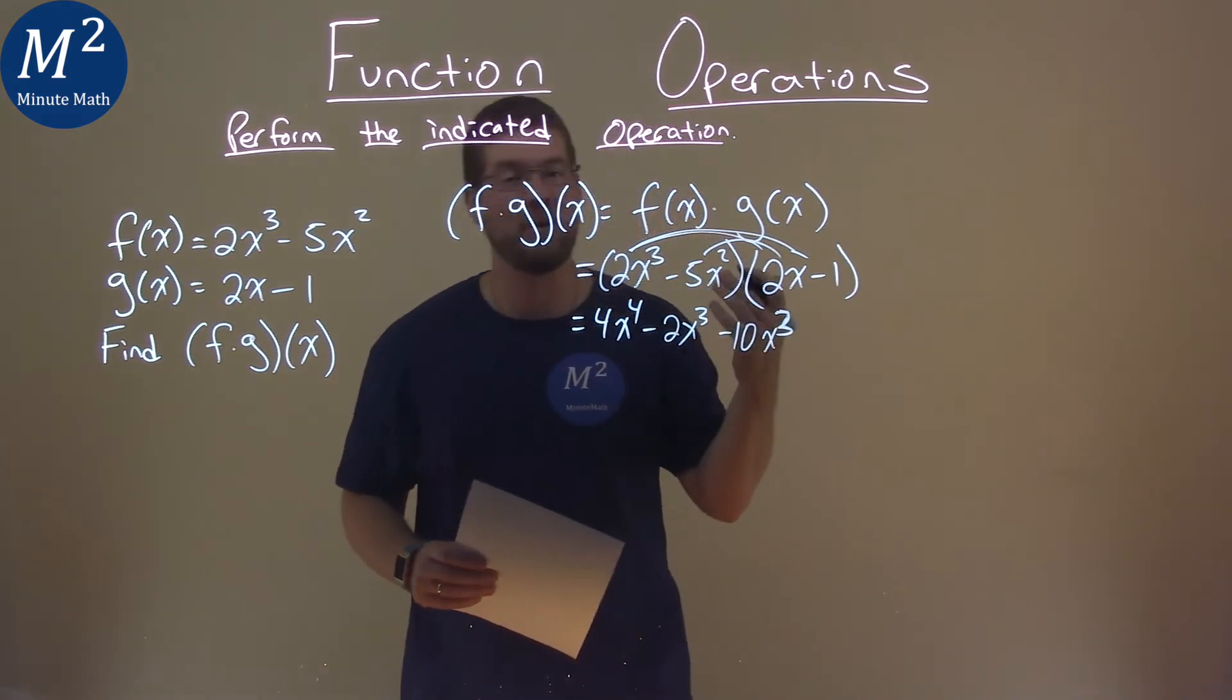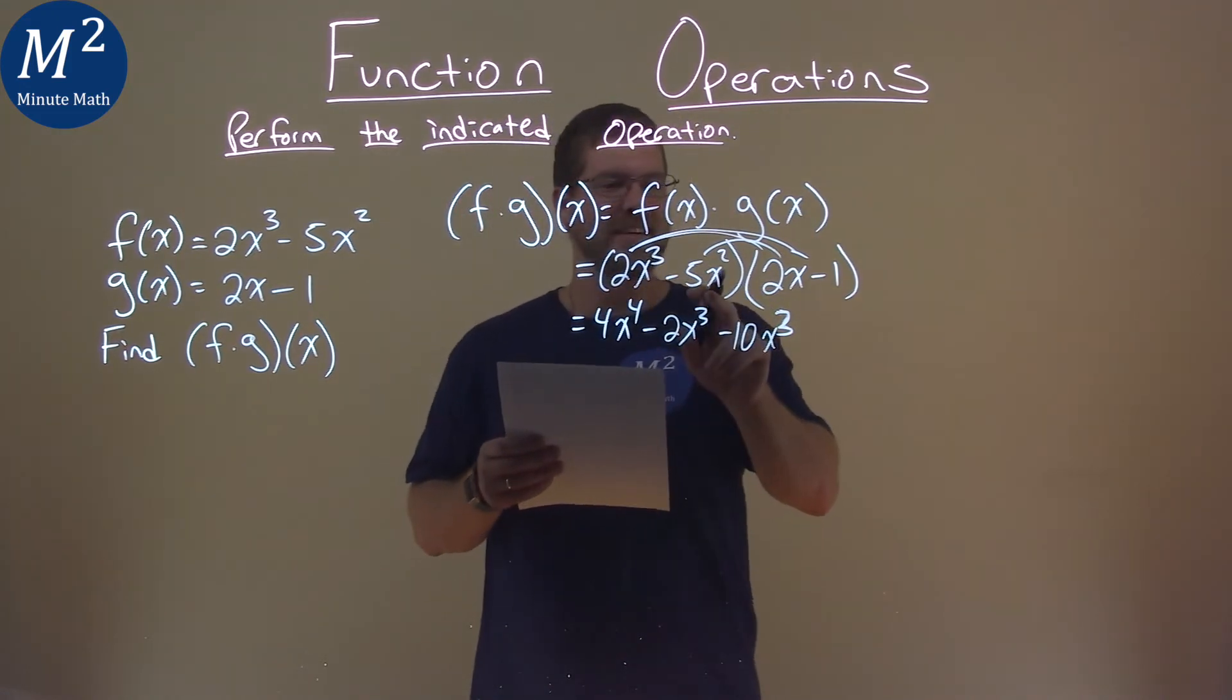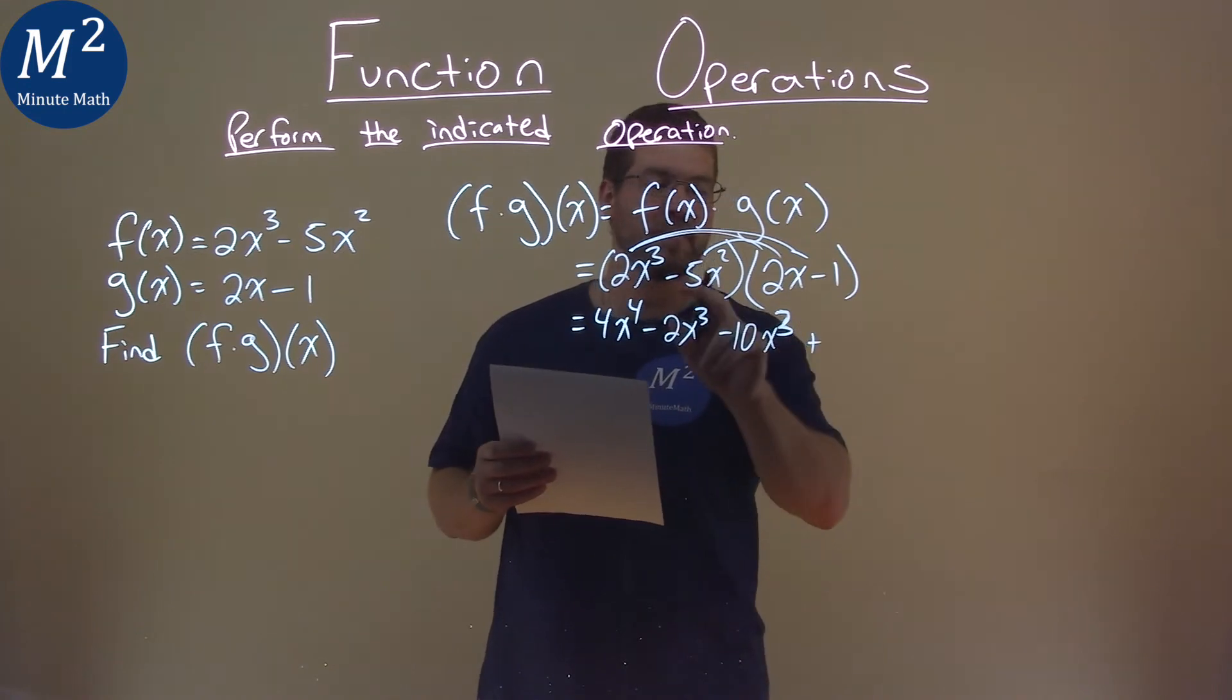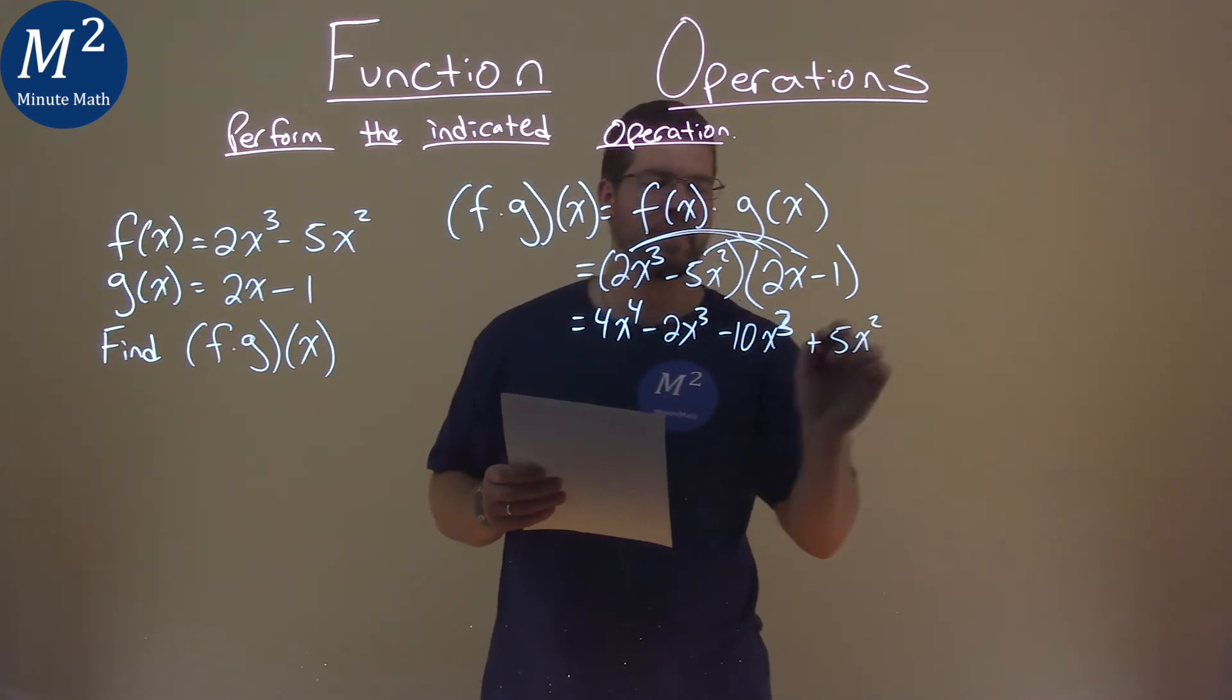Got to know my rules here. And negative 5x squared times a negative 1 is, well, a positive, 2 negatives make a positive, 5x squared. Alright.